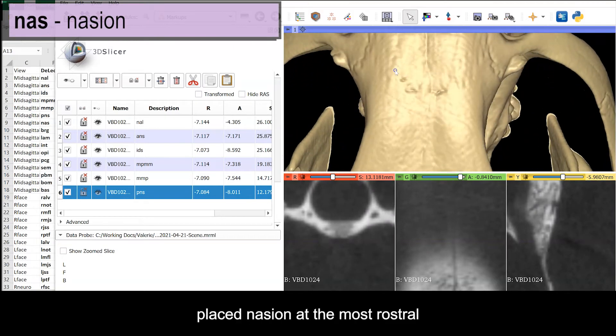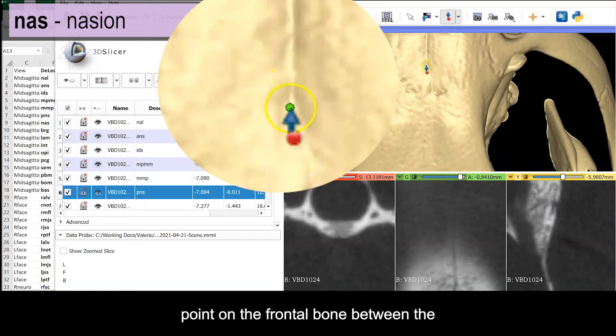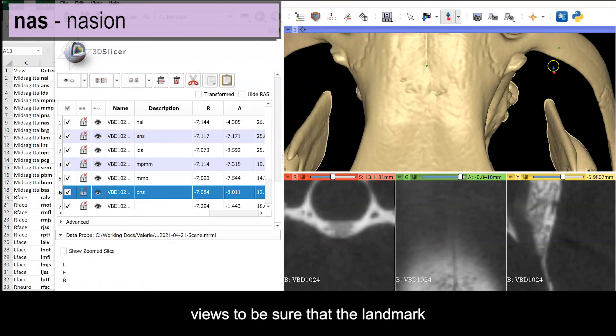Moving to the dorsal surface, place nasion at the most rostral point on the frontal bone between the nasal bones and checking orthogonal views to be sure that the landmark is not falling into the suture.